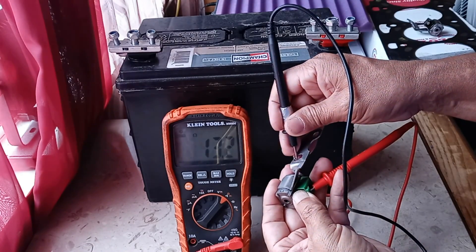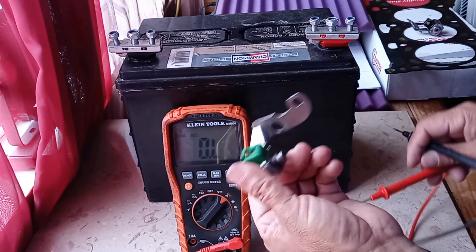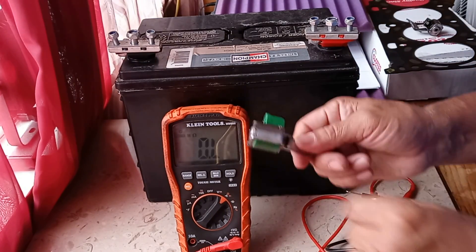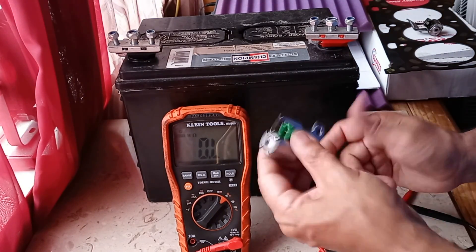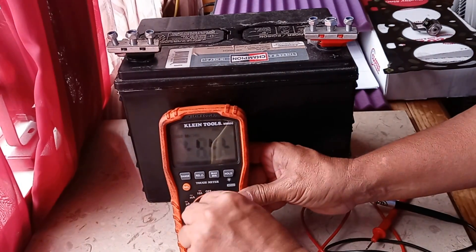Alright, 13.2 ohms, so that means this shift solenoid is good on the first test. So it has passed the first test, let's put this aside.